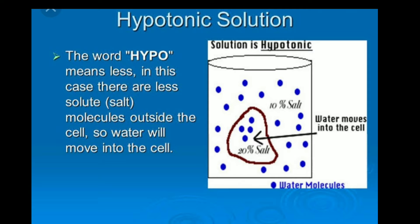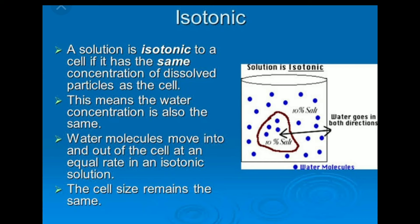A hypotonic solution has fewer solute molecules outside the cell — 'hypo' means less. In this case, water will move into the cell. For example, if the outside solution is 10% salt and inside is 20%, water moves into the cell.